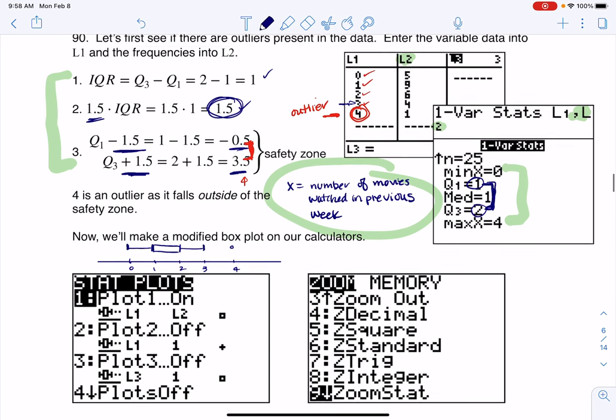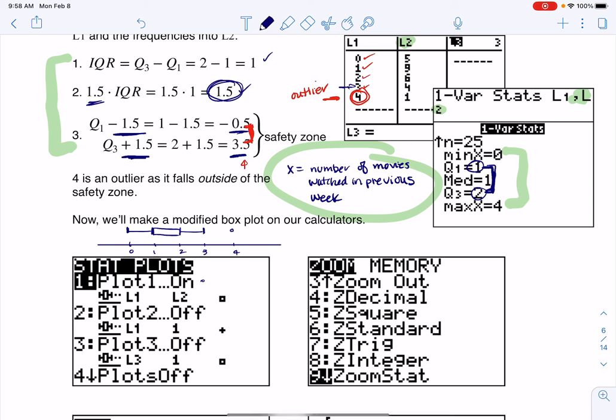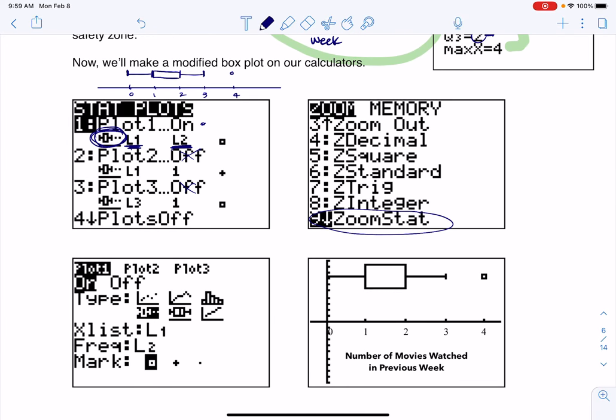On my calculator screen, I had Plot 1 on with the modified box plot type, variable in L1, and frequencies in L2. If I had listed all those numbers out, I would have a frequency list of one, but I had frequencies in L2. I set up my stat plot and zoom 9. Here is my calculator box plot, which looks pretty good compared to the hand sketch. One thing unique to box plots is there is no label on the y-axis. Histograms and bar charts have y-axis labels, but box plots don't. That's number 90. Thanks so much, everyone.